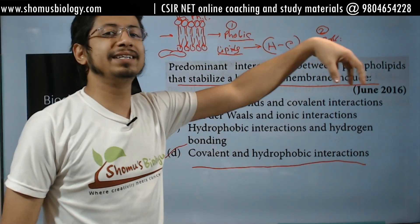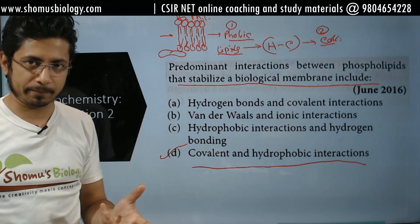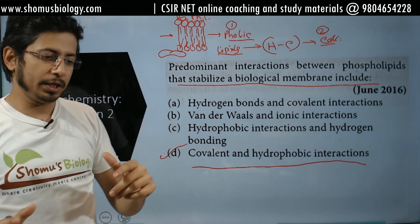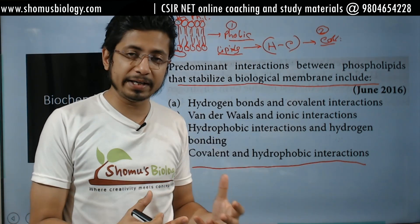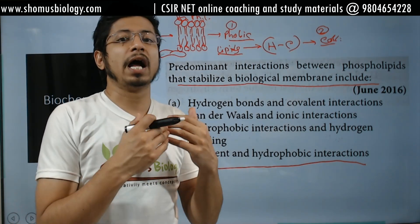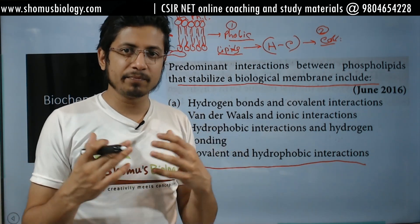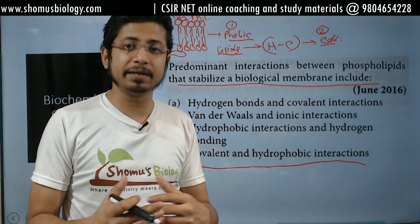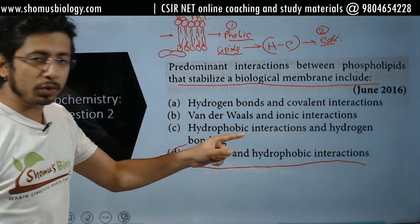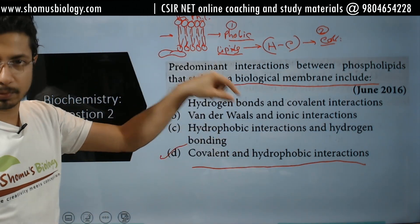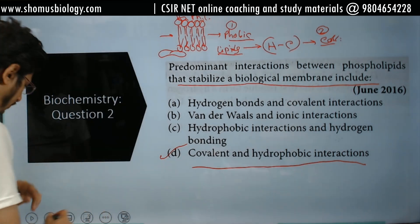Now look at this question — it does not require any trick. It is a direct question. You need to know the answer. You need to know whether covalent interactions and hydrophobic interactions are present in maintaining the phospholipid bilayer of a cell membrane. If you do not know that, you cannot answer this question. No trick will be applicable here.